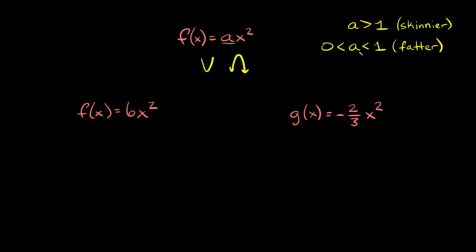And if your a value is between 0 and 1 — so if it's a decimal or a fraction between 0 and 1 — your parabola actually gets fatter, which is called a vertical shrink. Now if either of your numbers are ever negative, the same rules still apply, it just flips your parabola upside down.